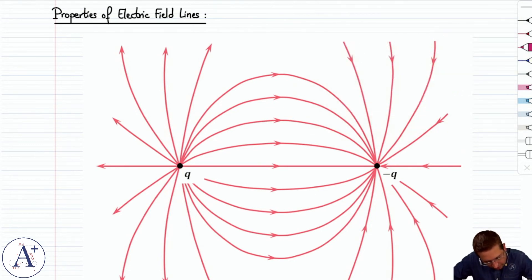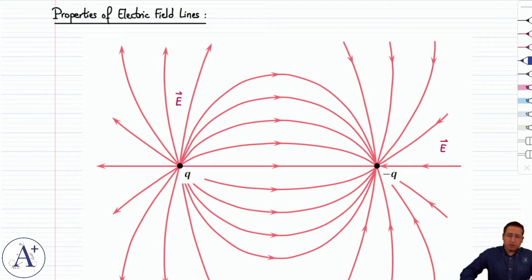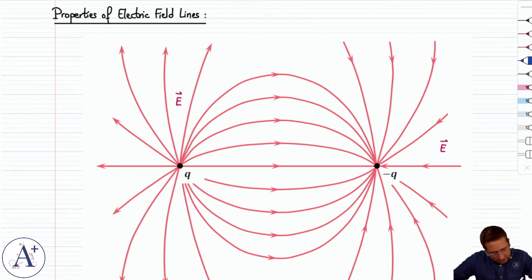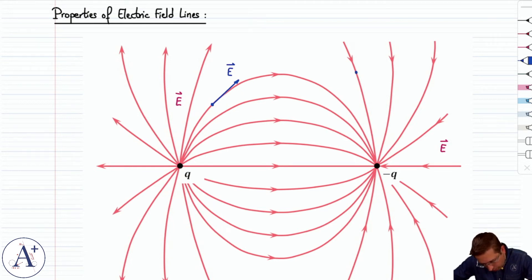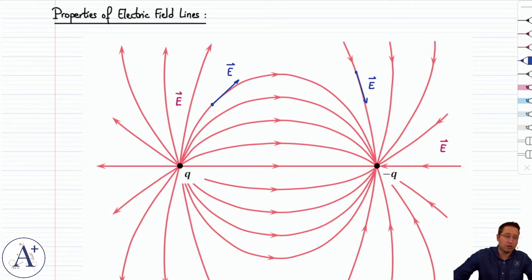These lines represent the electric field everywhere in the space surrounding the electric dipole. The first property of electric field lines is that the electric field is tangent to the field line, and in the direction of the field line, at any point. So if you pick any point, you draw a vector tangent to the field line in the direction of the field line, and that gives you the direction of the electric field at that point.